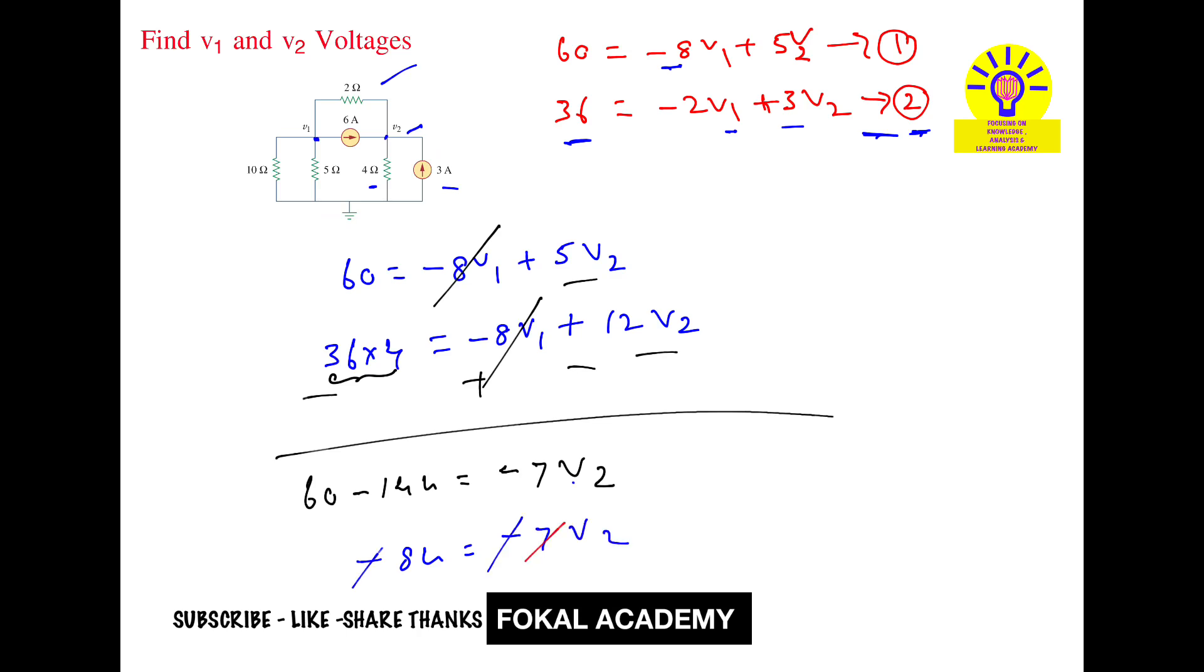Now substitute v2 value in equation 2: 36 equals minus 2v1 plus 3 times 12. 36 equals minus 2v1 plus 36. Bringing 36 to the left: 0 equals minus 2v1, so v1 equals 0 volts and v2 equals 12 volts.